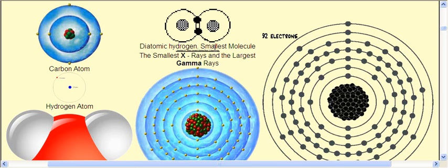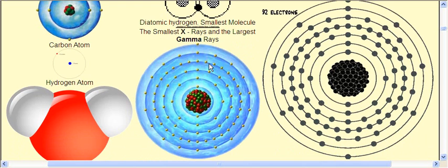The smallest x-ray is this big, so x-rays can get quite small. That's why electron microscopes can take photos of things that are almost as small as an atom. The largest gamma ray is the same size as the smallest x-ray — that's the demarcation line that scientists have decided to put between an x-ray and a gamma ray.